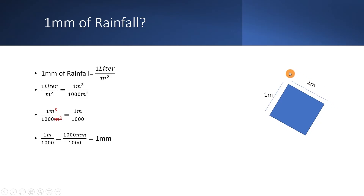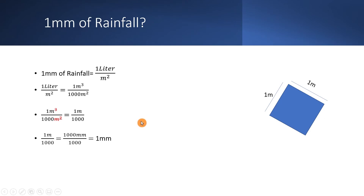So one millimeter of rainfall means one liter of rainfall in one square meter of area. I hope that now you will be able to imagine the extent of rainfall whenever it's displayed in the news or in a weather forecast. It's simple: millimeters of rainfall means liters per square meter at any place. Thank you very much!